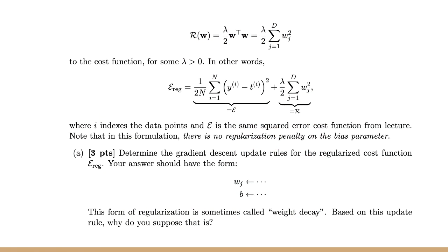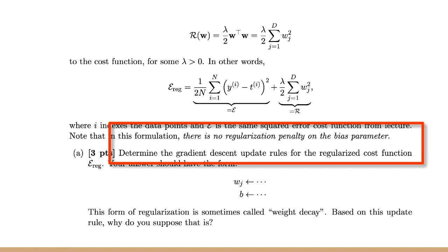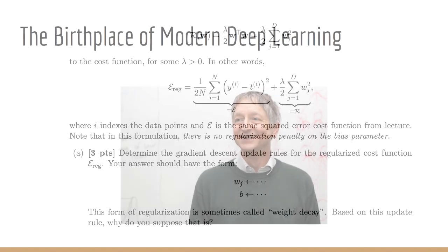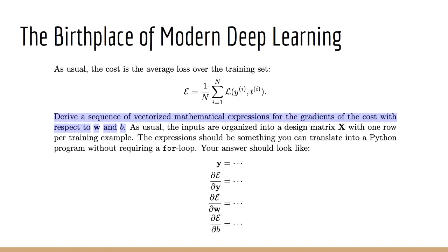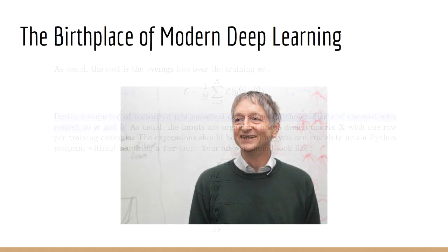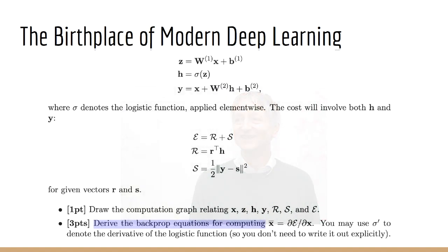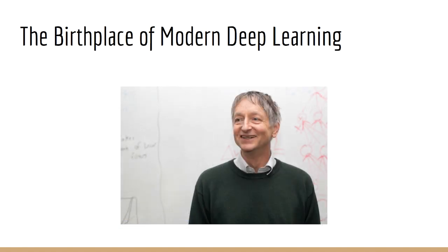Let's check out Homework 1. Oh look: Deriving Gradient Descent Update Rules. Alright, maybe that's a fluke. Let's check out Homework 2. Oh look: Derive a sequence of vectorized mathematical expressions for the gradients of the cost with respect to W and B. Well, let's try one more time — Homework 3: Derive the backprop equations for computing... Gradient Descent and Backpropagation. As you can see, it makes up a pretty significant portion of the course.